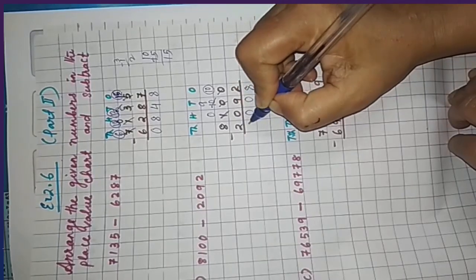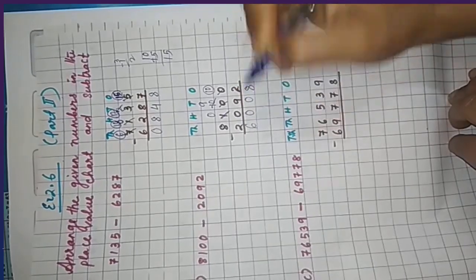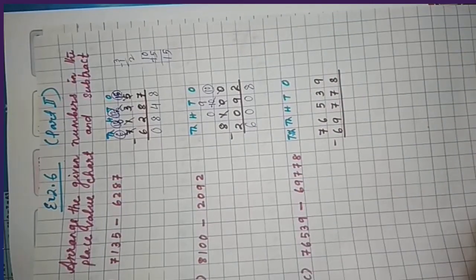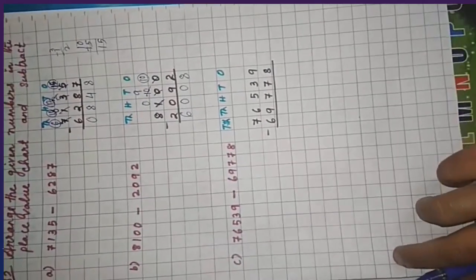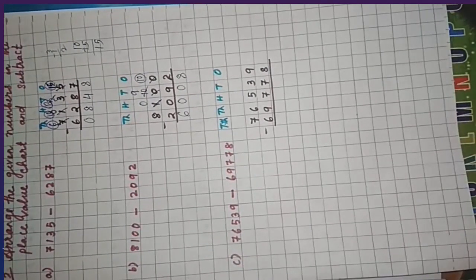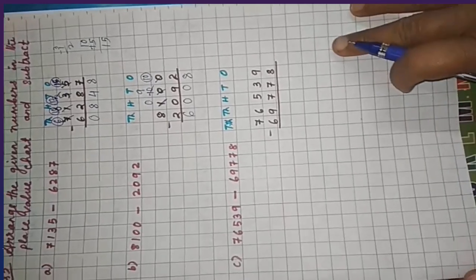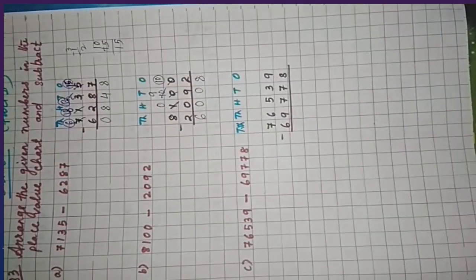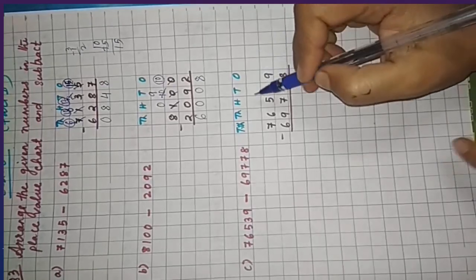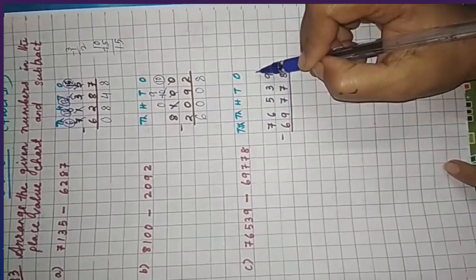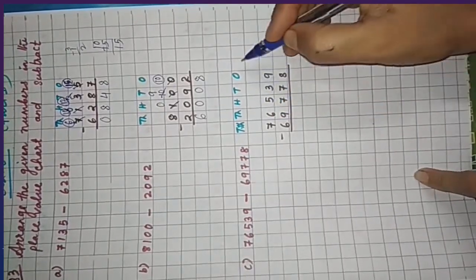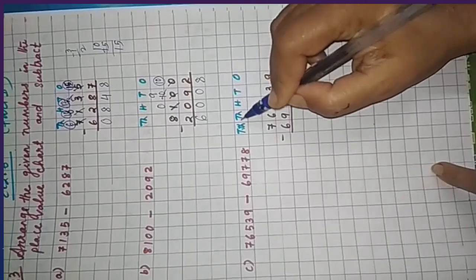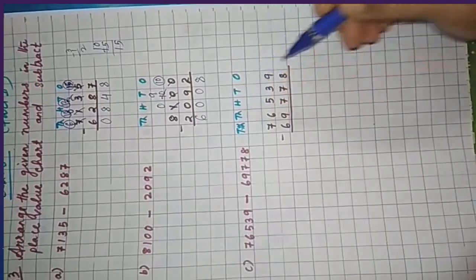The answer is 6008. Next question: 76539 minus 69778. Leave one line for working and borrowing. Write ones, tens, hundreds, thousands, and ten thousands columns.